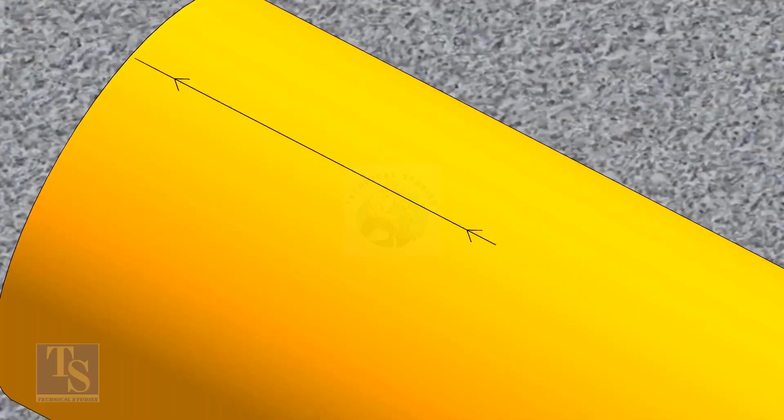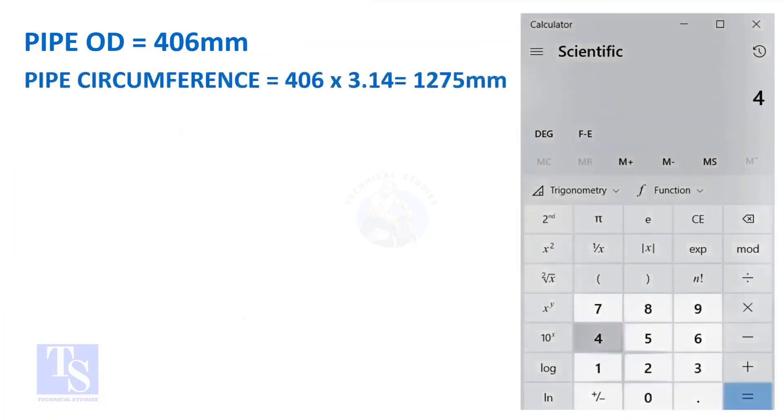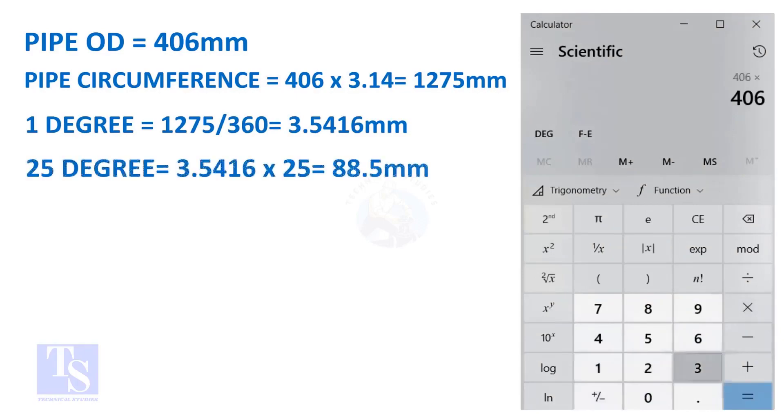Let us calculate the circumferential distance or arc length for 25 degrees. Multiply the OD by 3.14, you will get the circumference of the pipe. Divide the circumference by 360, you will get the arc length of 1 degree. And finally, multiply the 1 degree arc length by 25. Now you have the arc length of 25 degrees. You can apply this formula to get the arc length of any degree.